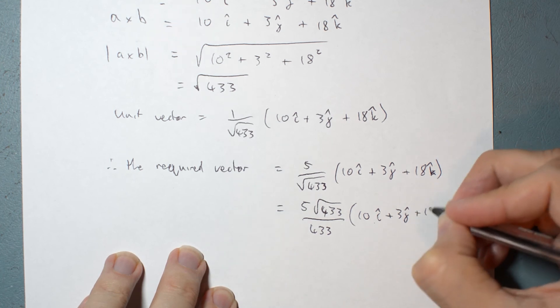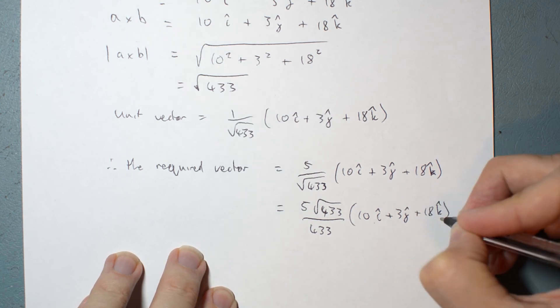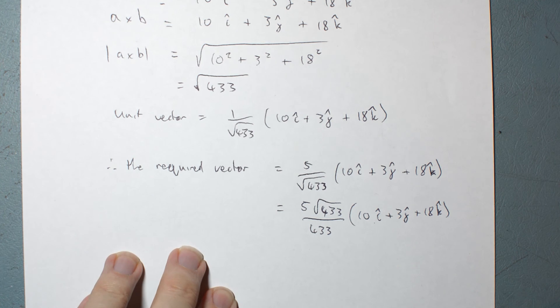And we have successfully determined a vector orthogonal to A and B. We know it's orthogonal because this one is the cross product, and it has magnitude 5.